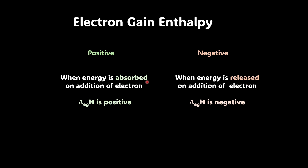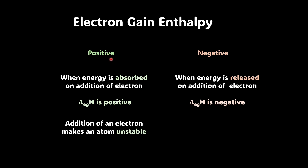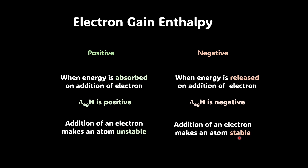When is the energy absorbed or when is the energy released? Consider this: if the X minus anion being formed is becoming stable, it will release energy. Whereas if X minus is becoming unstable, that means it would not want to become X minus. So when we have positive electron gain enthalpy, addition of an electron makes an atom unstable. Whereas when we have negative electron gain enthalpy, addition of an electron makes an atom stable. Release of energy is always associated with stability.